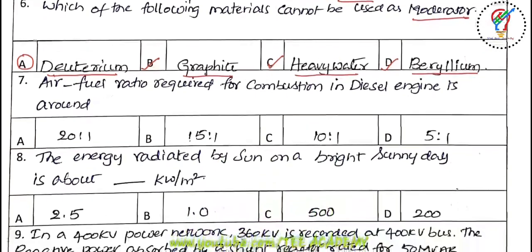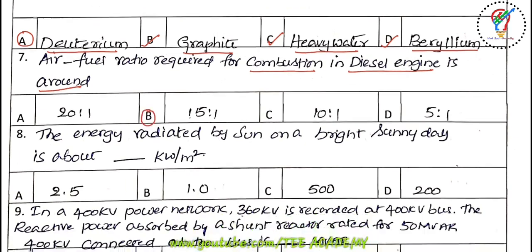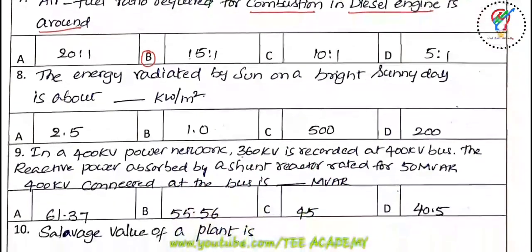Seventh question: the air-fuel ratio required for combustion in a diesel engine is around 15:1, which is the right answer.